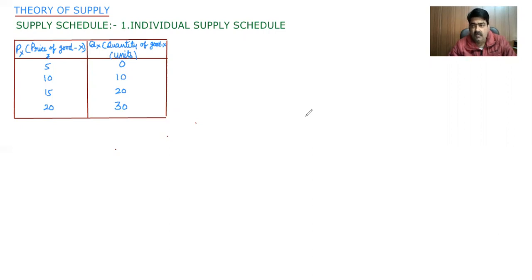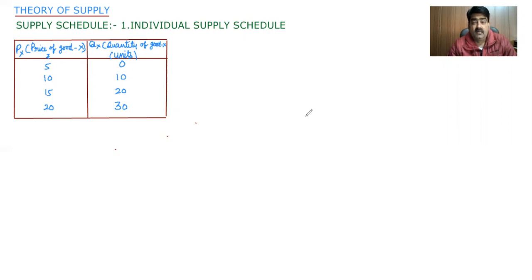Now you can see on your screen, one table is there. In it, you can see price of good X. We have taken a good known as X, and these are different prices: 5, 10, 15, and 20, and quantities of good X are 0, 10, 20, and 30. Now I will explain about this table.